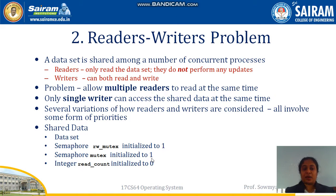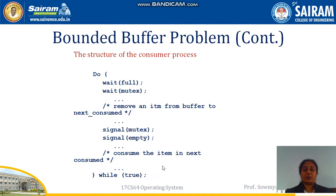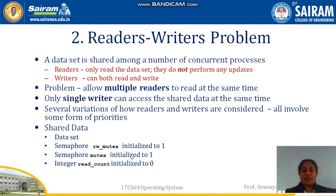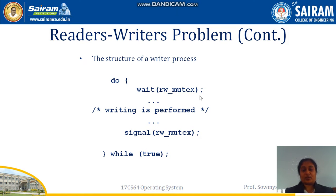read_write_mutex is initialized to 1, mutex is initialized to 1, and read_count is initialized to 0. For the writer process, it waits on read_write_mutex — if the value is 0 another writer is holding it; when it returns to 1, the writer can access and write to the data set. After writing, it signals read_write_mutex back to 1 so the next writer will be allowed to write.